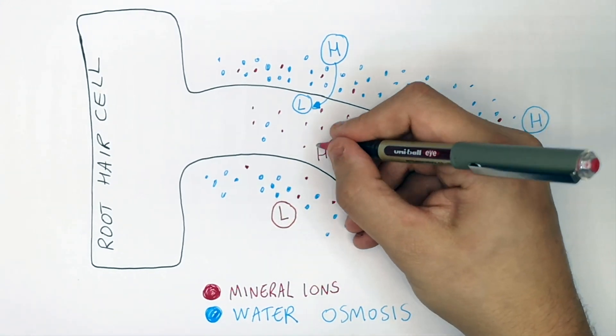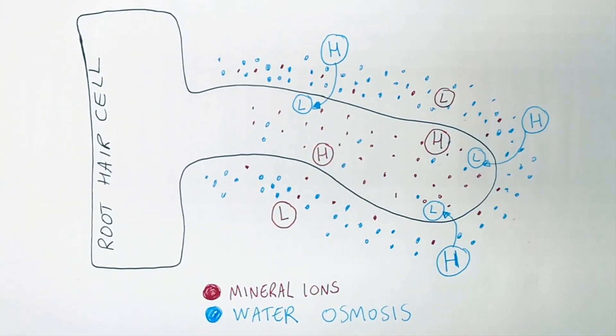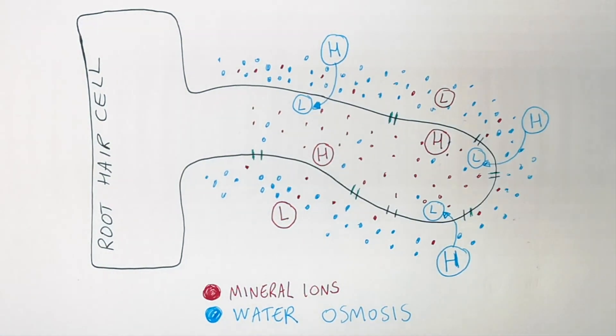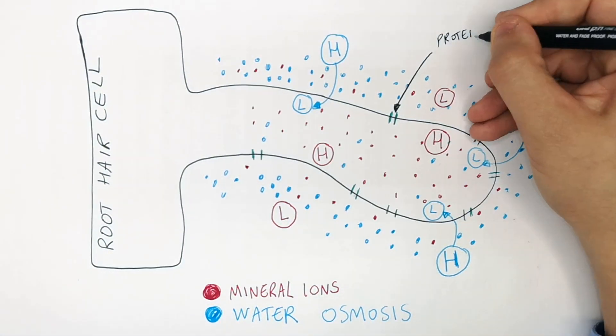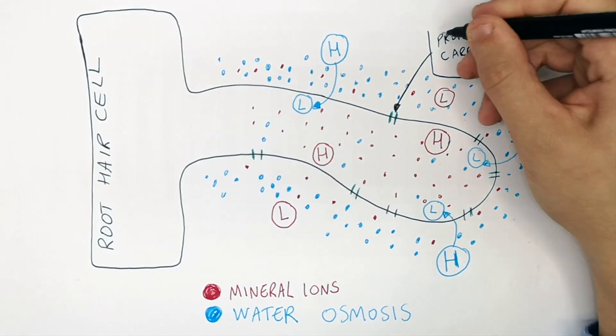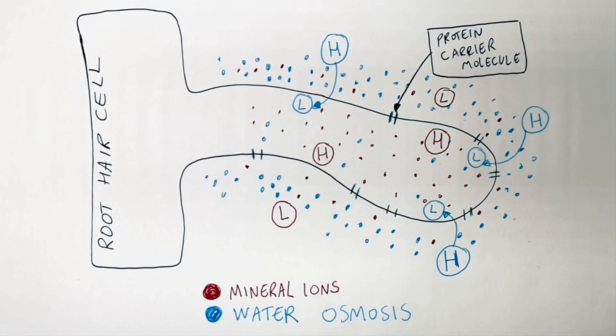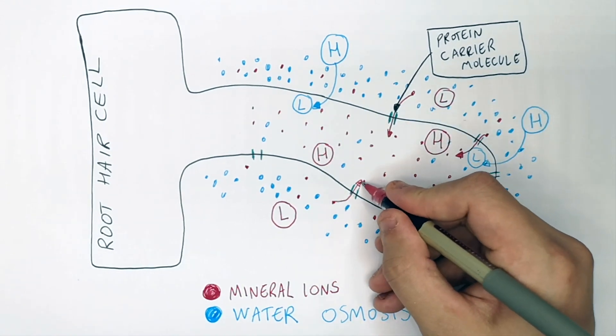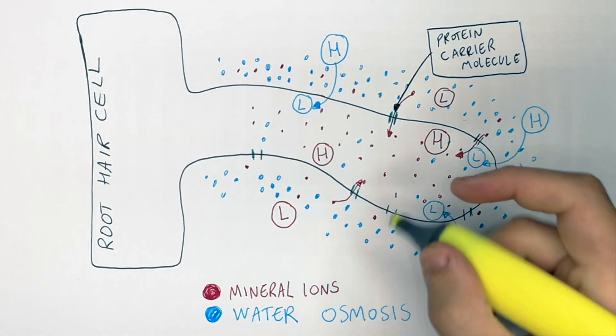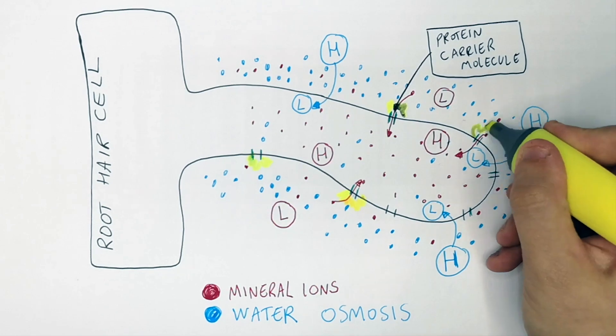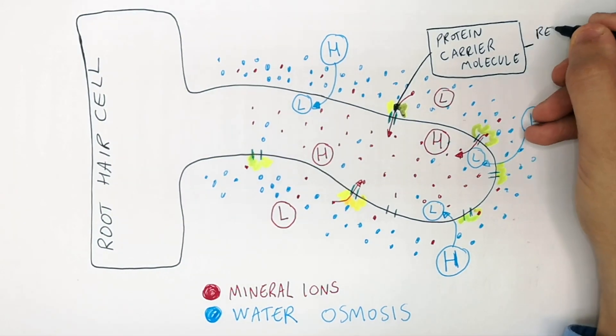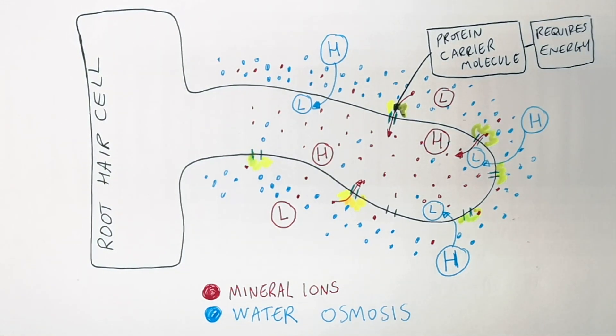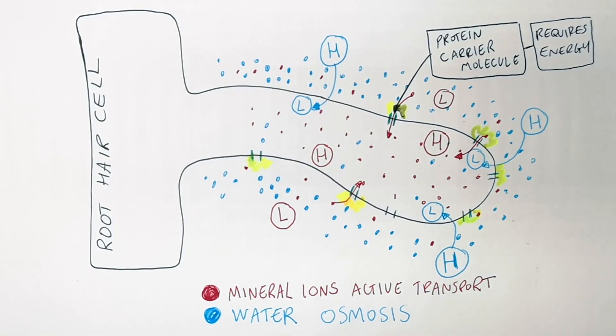Whereas mineral ions, there is a lower concentration on the outside than inside. So it requires protein carrier molecules in the root hair cell. These protein carrier molecules are embedded in the cell membrane and what they do is they actively transport mineral ions into the root hair cell through the protein carrier molecule using energy. So protein carrier molecules require energy to transport mineral ions from a low to high concentration by active transport.